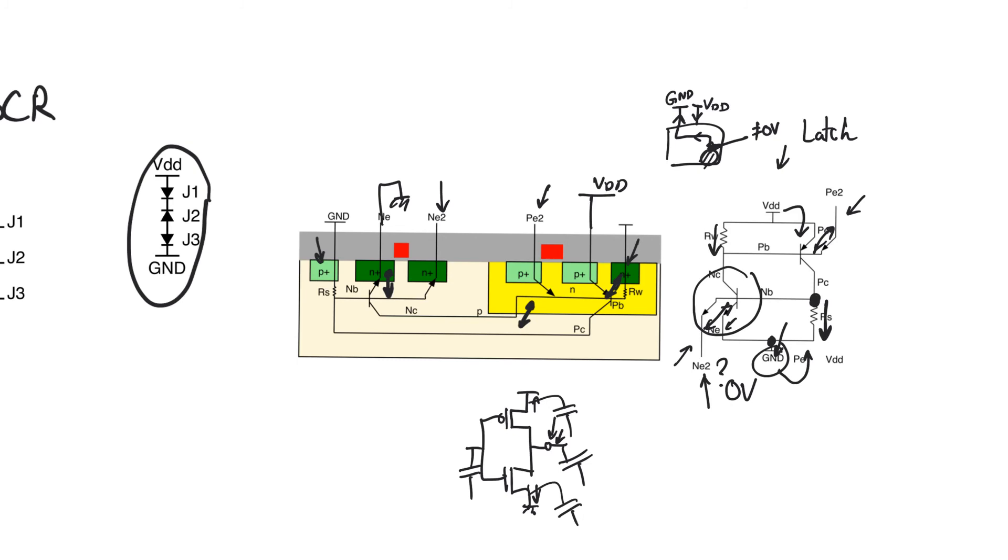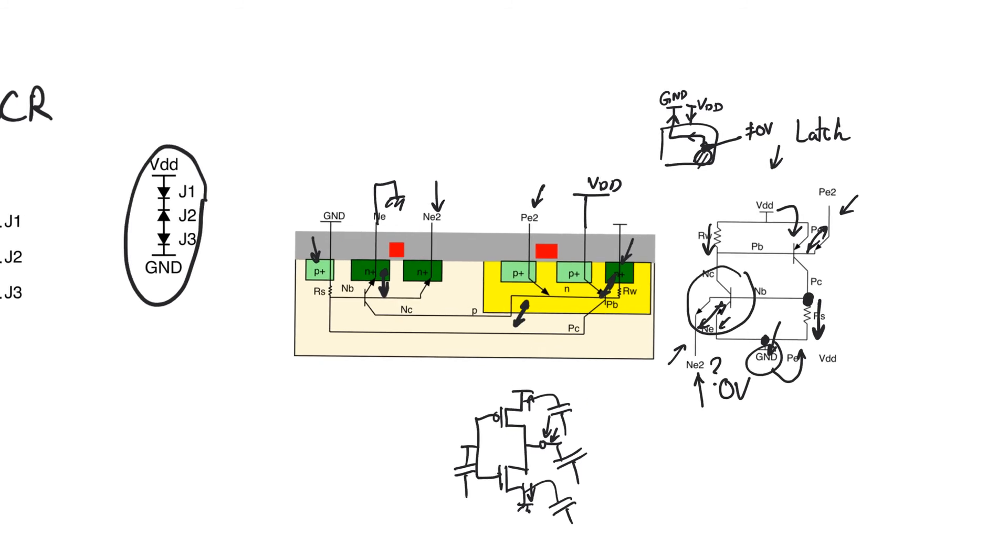Mainly by increasing the number of ground and supply contacts in the wells. Theoretically, we should only have one contact per well, one contact per substrate, but we should actually increase the number. Some design rules even stipulate that we should use one contact per transistor. So, there should be one N-plus contact per PMOS transistor, and one P-plus contact per NMOS transistor.